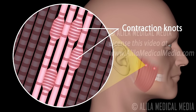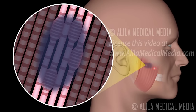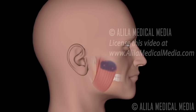A trigger point is composed of many contraction knots where individual muscle fibers contract and cannot relax. The sustained contraction of muscle sarcomeres compresses local blood supply, resulting in energy shortage of the area. This metabolic crisis activates pain receptors, generating a regional pain pattern that follows a specific nerve passage.